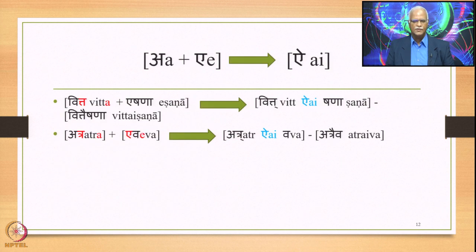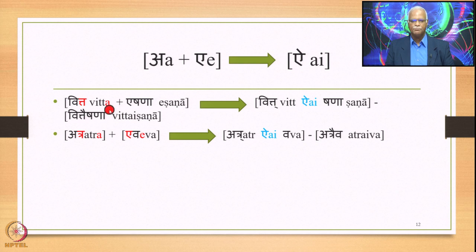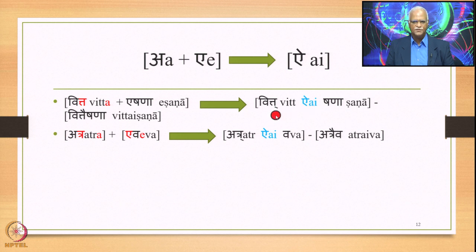Let us look at specific concrete examples. First, where A plus E gives Ā: we have the compound Pakva plus Edana — A appears at the end of the first pratipadika and E at the beginning of the second. In Samhita mode 6.1.88 applies and the output is Pakv-Ā-dana. Another example across two separate padas: Atra plus Eva, where A ends the first pada and E begins the second, giving Atraiva.